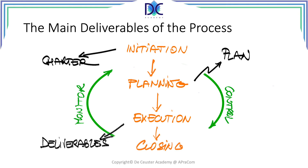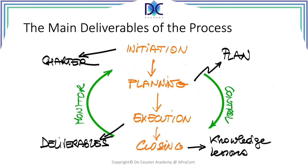Execution is about deliverables — creating the deliverables — and of course we will also monitor and control the creation of these deliverables. The last step, sometimes forgotten but still very important and should always be conducted, is the project closing. Here we're talking about knowledge, gathering the information and lessons learned about the project. But we will see that there are more things in the closing part than just these.